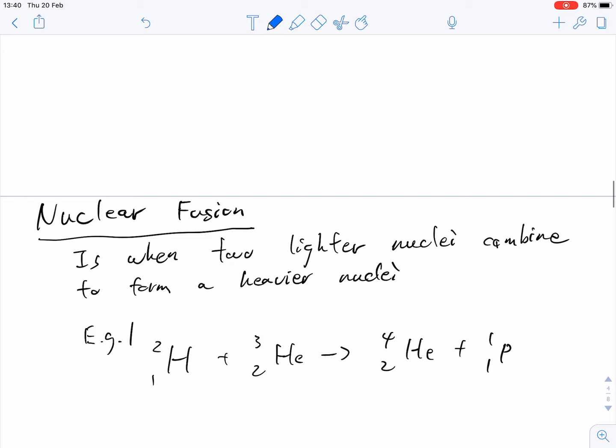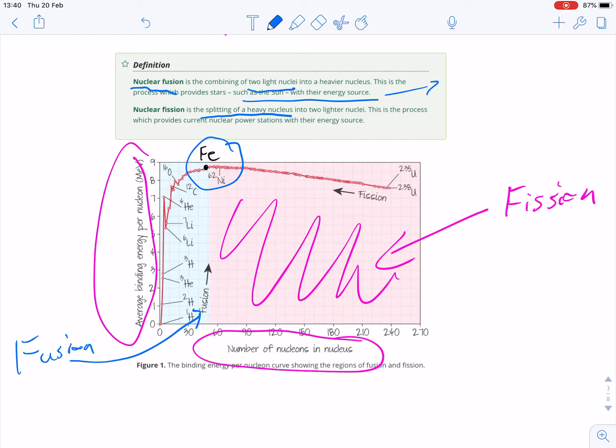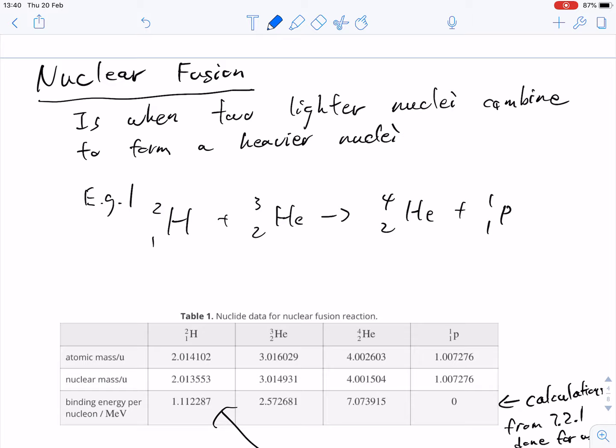So that was our learning objective numbers two and three. Now, I highlighted iron here. Sorry, just going back a little bit. Cognity highlights nickel there. Iron is also pretty close in that sort of plateau where it could be one or the other. So just for your awareness, if you do a search, you might see iron. You might not see nickel in our Google searches. Let's get into some calculations.